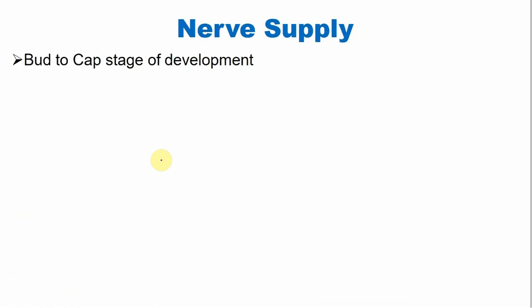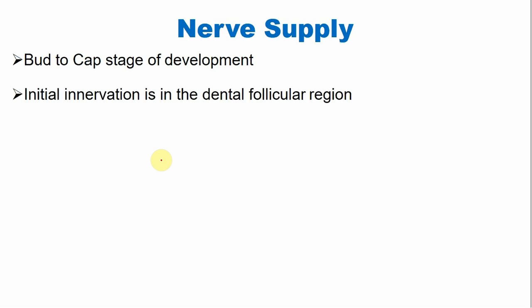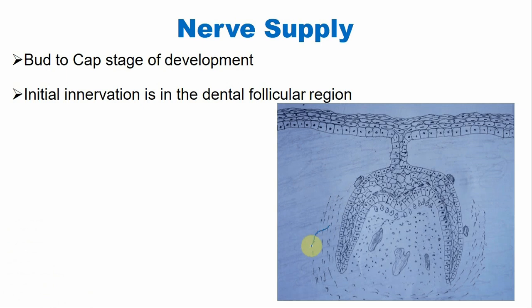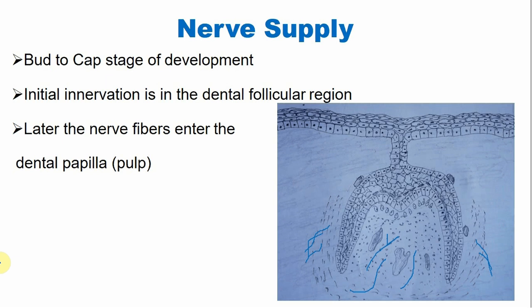The developing tooth needs nerve supply. Nerves start appearing early, from the bud to cap stage of tooth development. The initial innervation is in the dental follicular region. But later, these nerves also start appearing within the dental papilla area and enter the dental papilla as well.